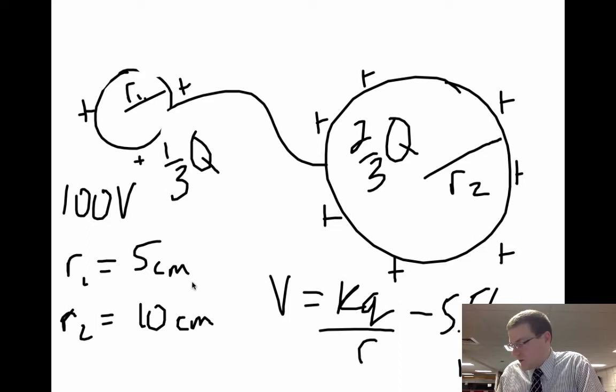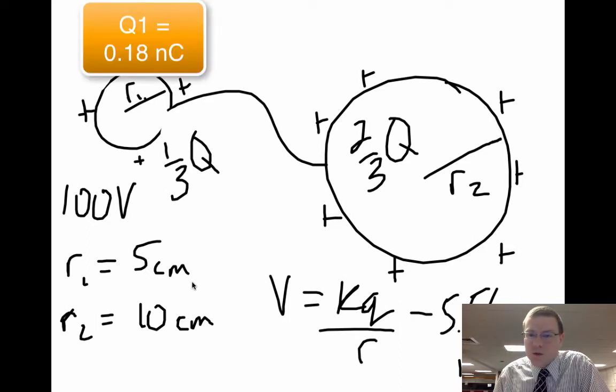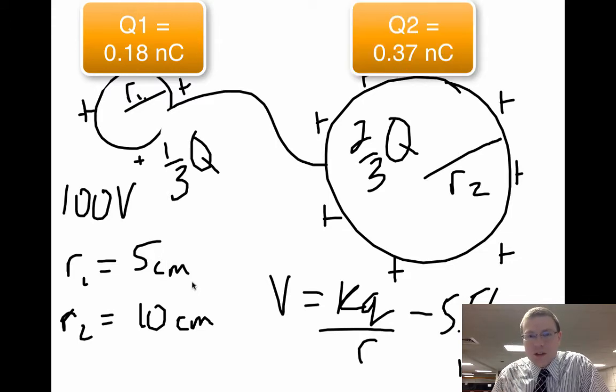So if you did your math for that, you could say that sphere 1 holds on to about 0.18 nC, while charge 2 holds on to about 0.37 nC of our total charge we found from before.